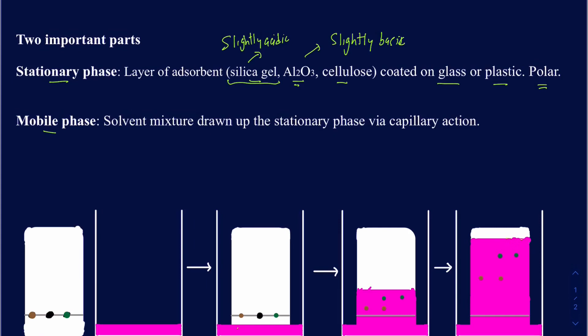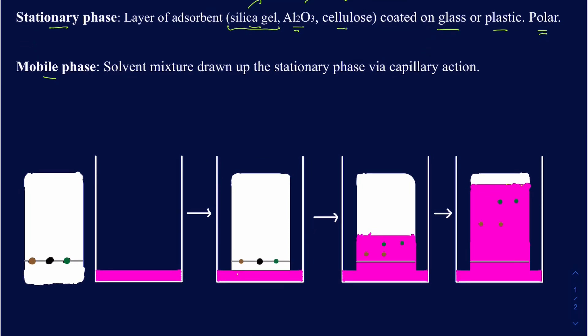The mobile phase is going to be the mixture of solvents that moves along the stationary phase, and the process being used here is capillary action. A really good example of capillary action is water going up the leaves of a tree from the roots against gravity — that's exactly the same phenomenon being used in TLC. There are many options when it comes to picking your mobile phase, ranging from something non-polar all the way to something very polar.